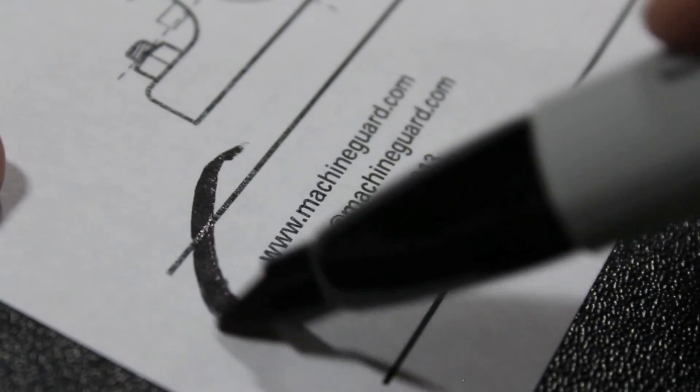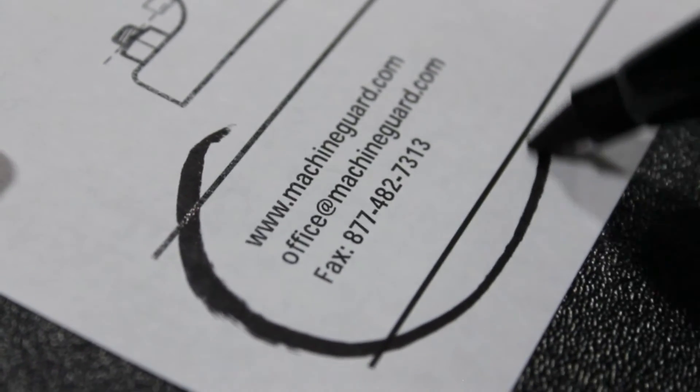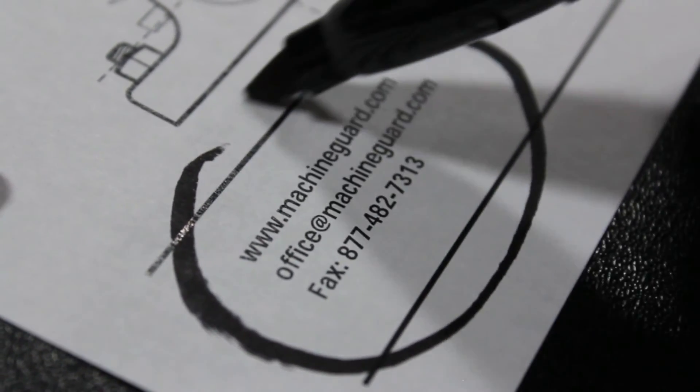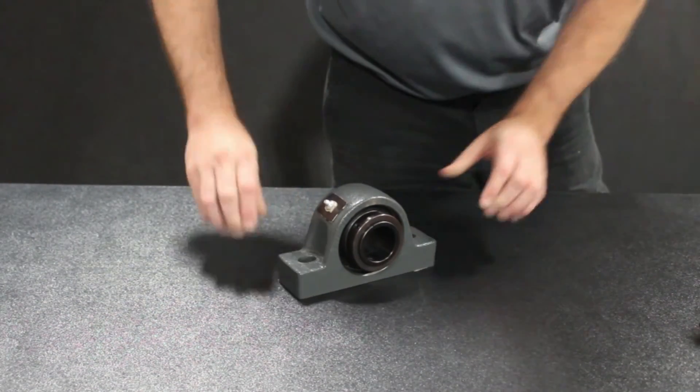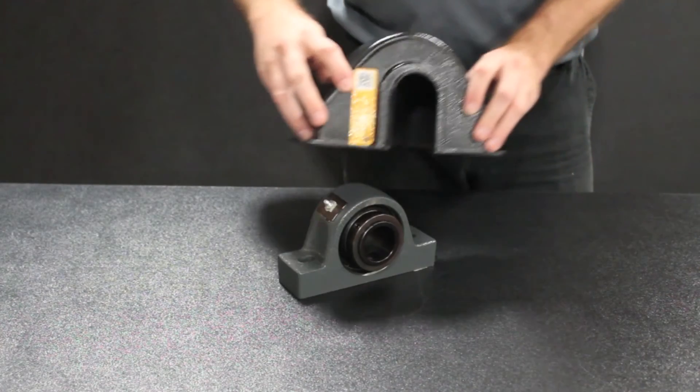When you have finished collecting all of the required measurements, send the finished measurement collection worksheet to Machine Guard and Cover Company. We will review the information and send you an appropriately sized guard for your pillow block bearing.